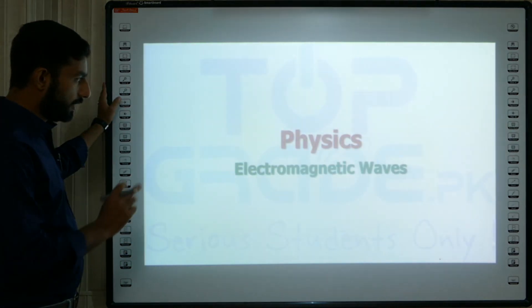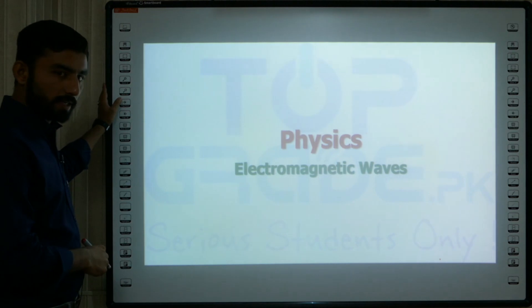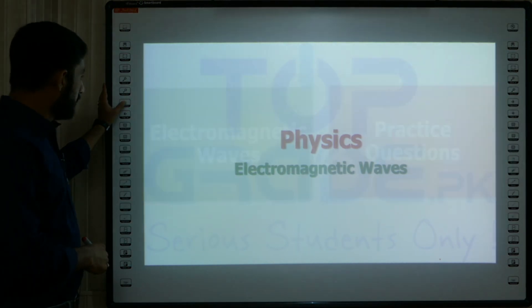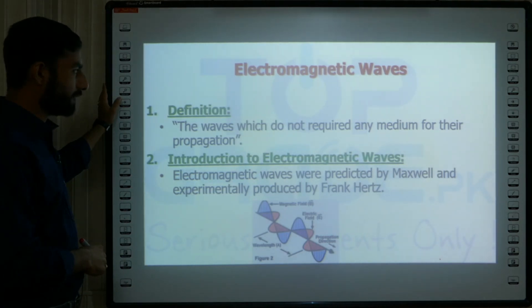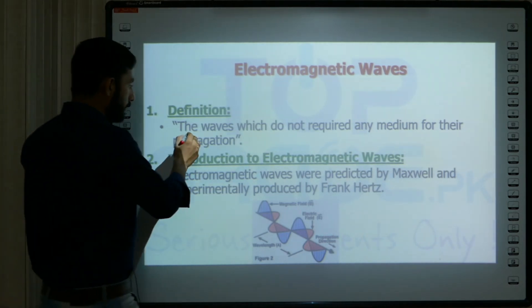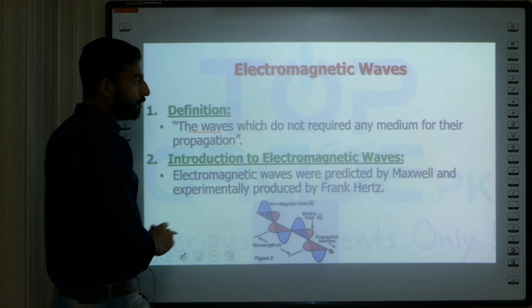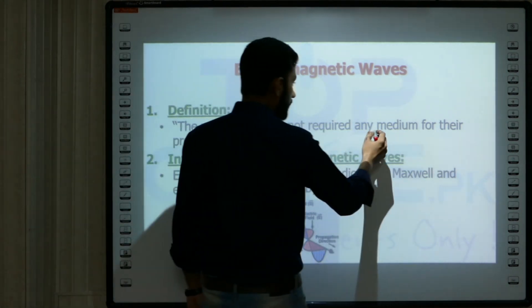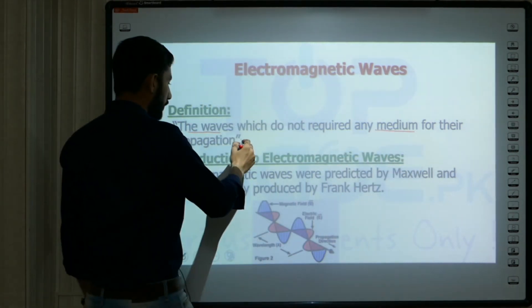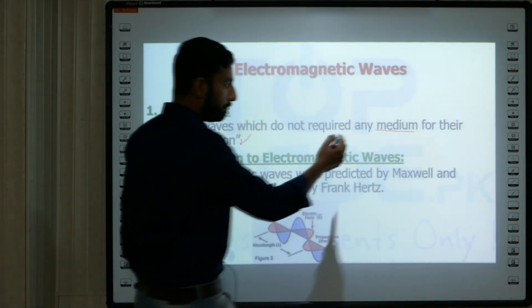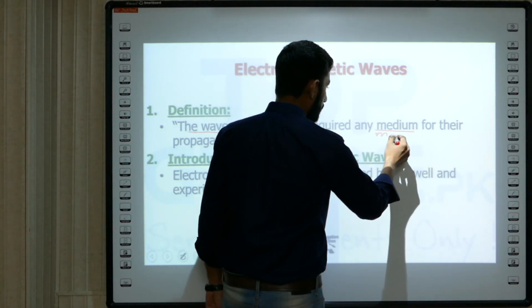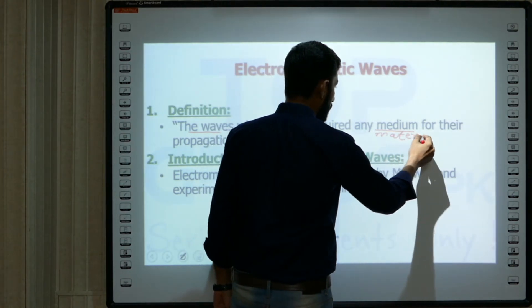EM waves or electromagnetic waves. So what are electromagnetic waves? The waves which do not require any medium for their propagation. These are waves that don't need any material medium for propagation, and these waves are called electromagnetic waves.